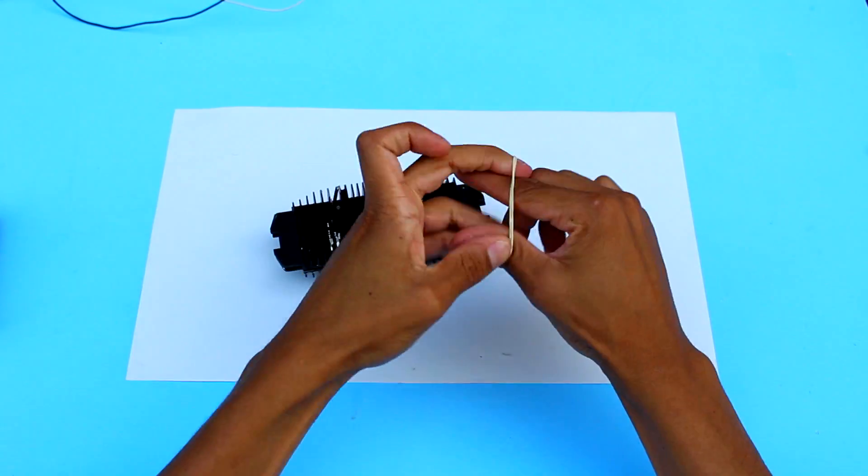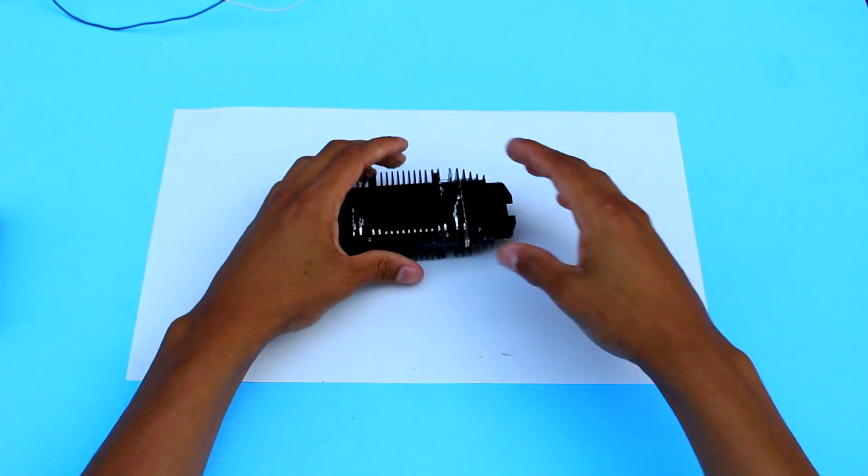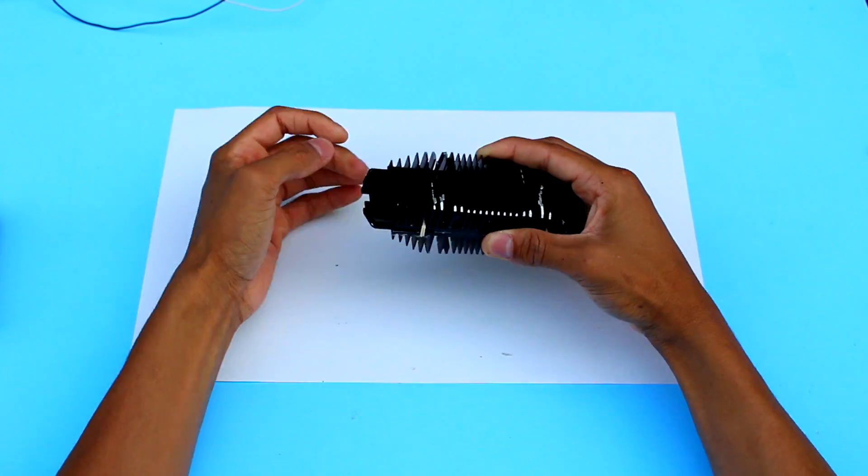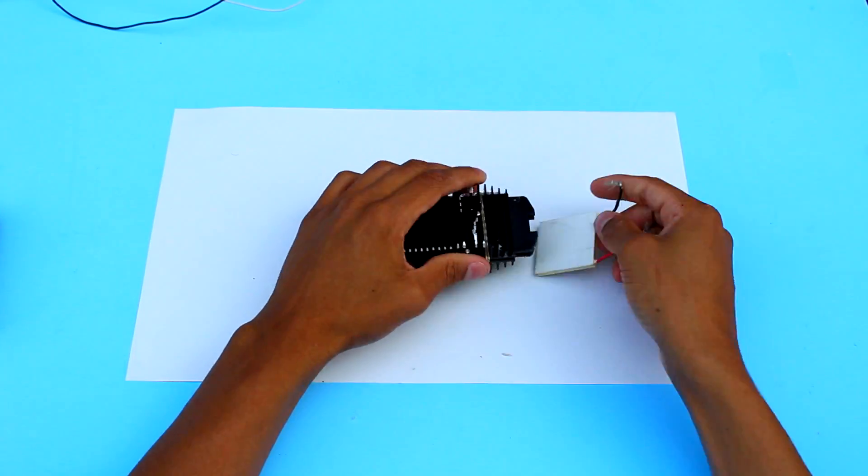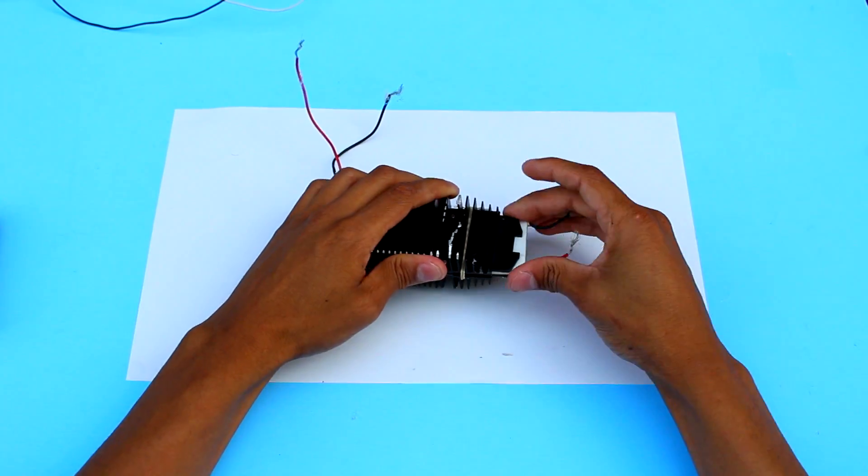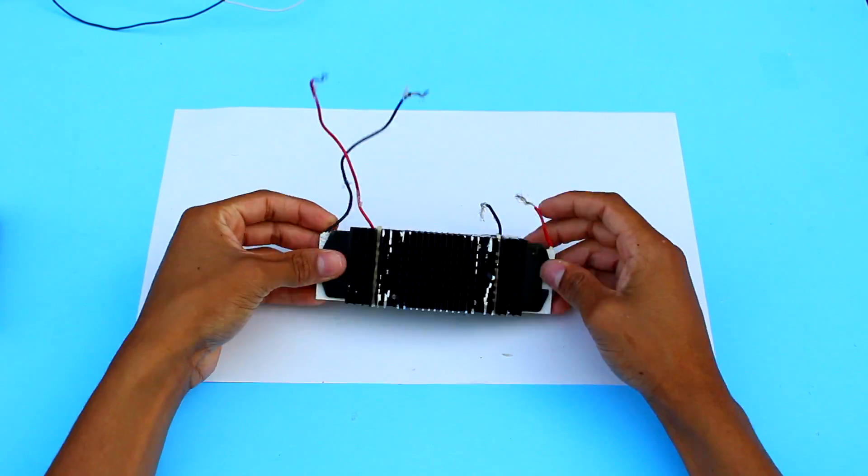So, first, we're going to start off with two heatsinks. If you don't have heatsinks, you can use copper pipes and flatten them out. I attach these together with an elastic band, and put Peltier elements in on each side. I want to make sure the same side is facing up for both of them.